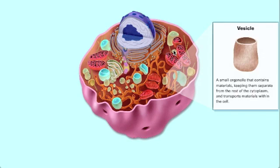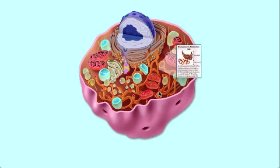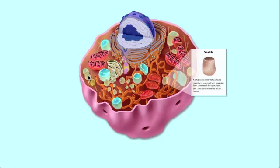Vesicle, a small organelle that contains material, keeping them separated from the rest of the cytoplasm, and transports material within the cell. Since we are done with animal cell, let's go ahead and do the plant cell.